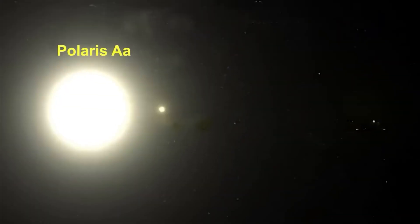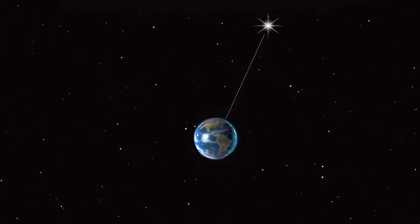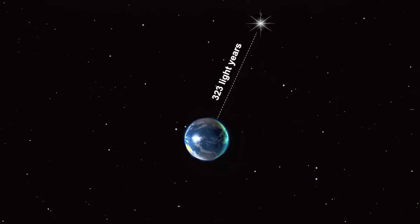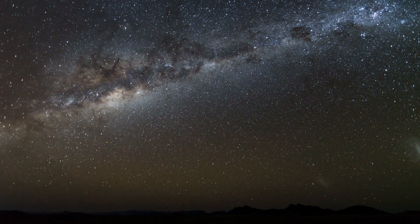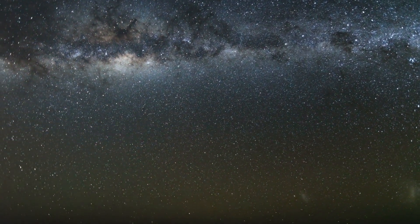It orbits a smaller companion star, Polaris AB, and both orbit a third star called Polaris B. Due to its distance from Earth, approximately 323 light-years away, the light we currently receive from Polaris originated over three centuries ago.